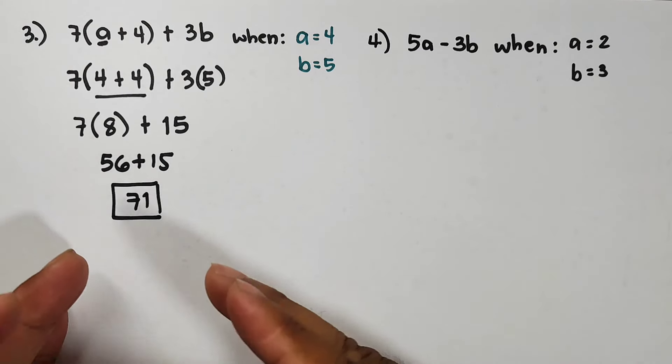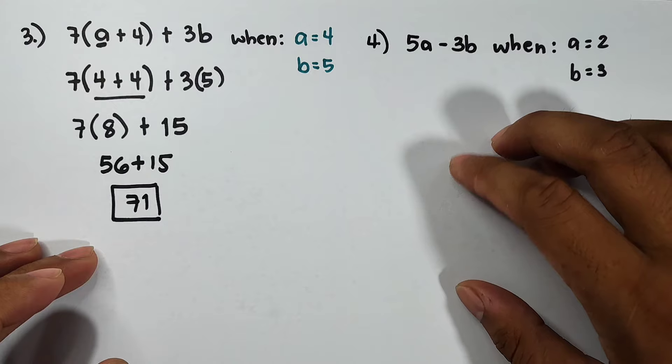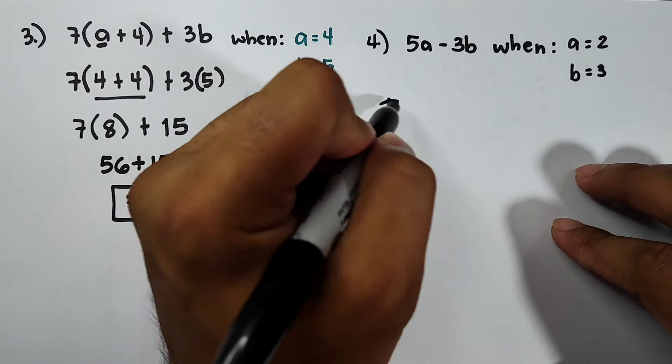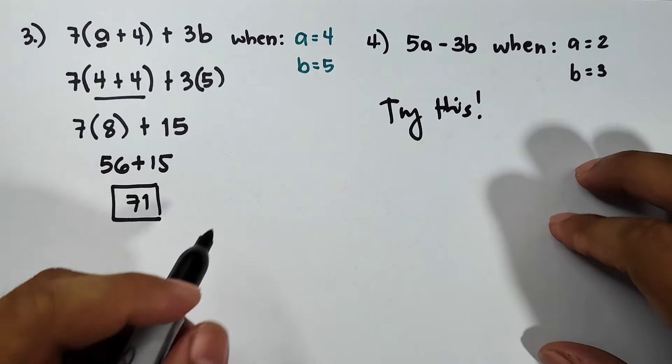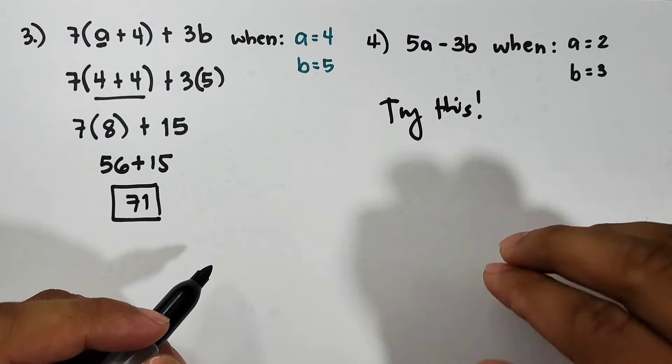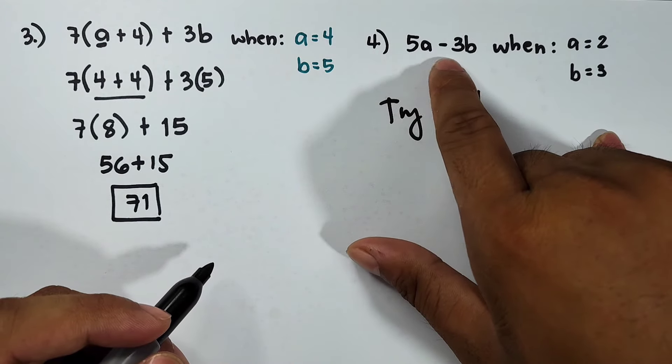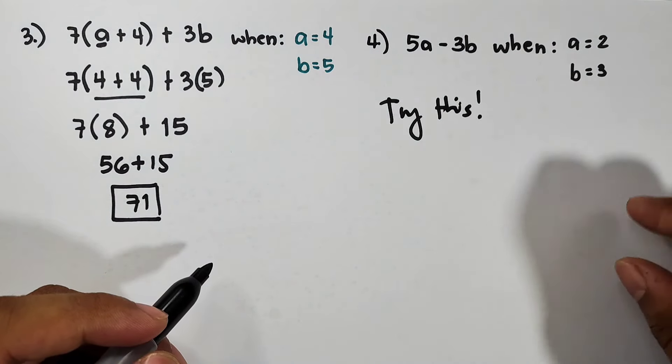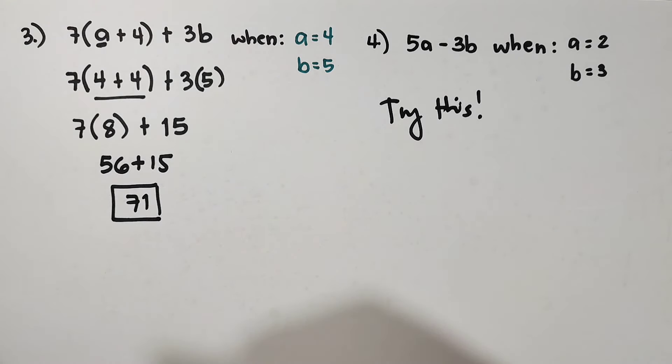So I hope guys that you understood what we did from example number 1, 2, and 3. And right now I have here your assignment. You can try this. And I hope that you put your answer in the comment section when you answer 5a minus 3b when a is equal to 2 and b is equal to 3. So again, I hope you learned something from this video on how to evaluate algebraic expressions.